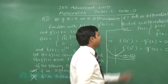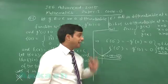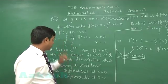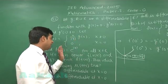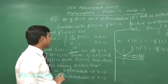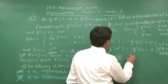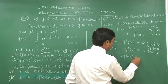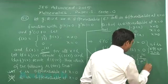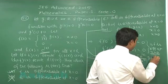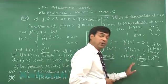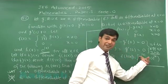Move to the third option: differentiability of f(h(x)). Since h(x) = e^|x| is always greater than 0, when we substitute e^|x| into f, the |x|/x term gives simply +1. So f(h(x)) = (e^|x| / |e^|x||) · g(e^|x|) = g(e^|x|), because e^|x| is always positive.